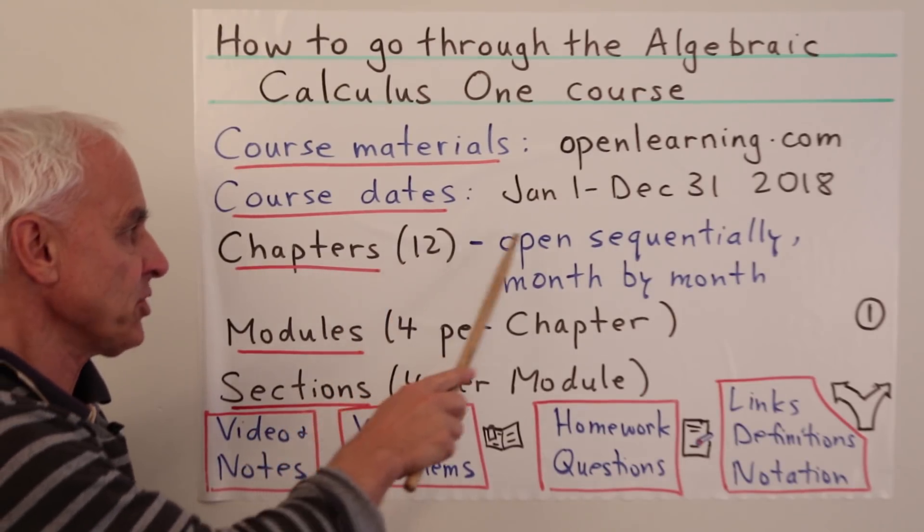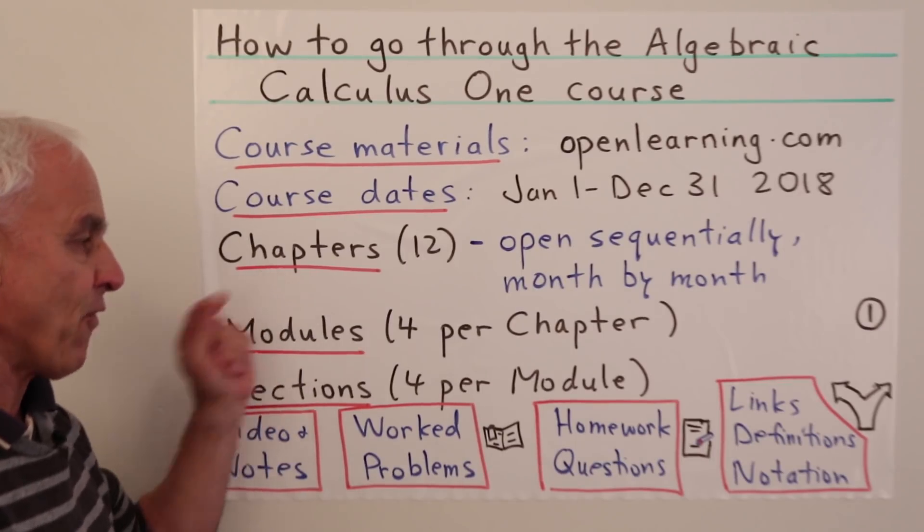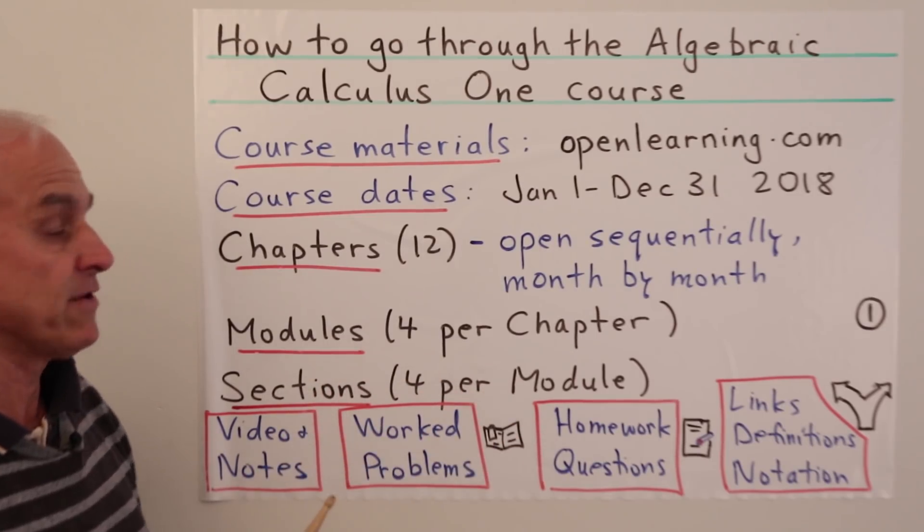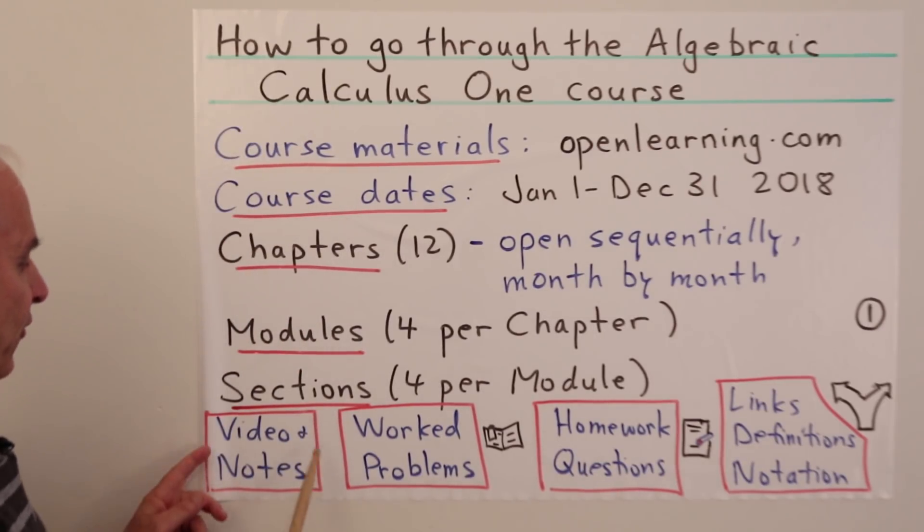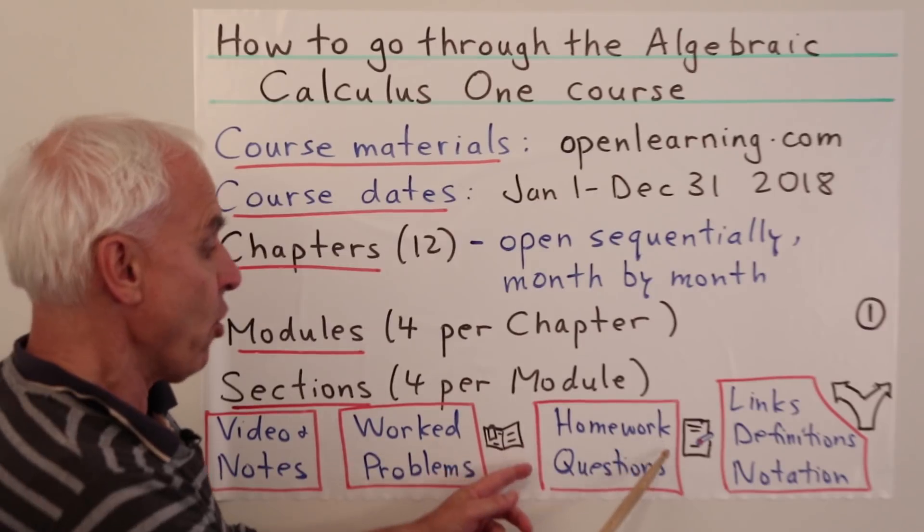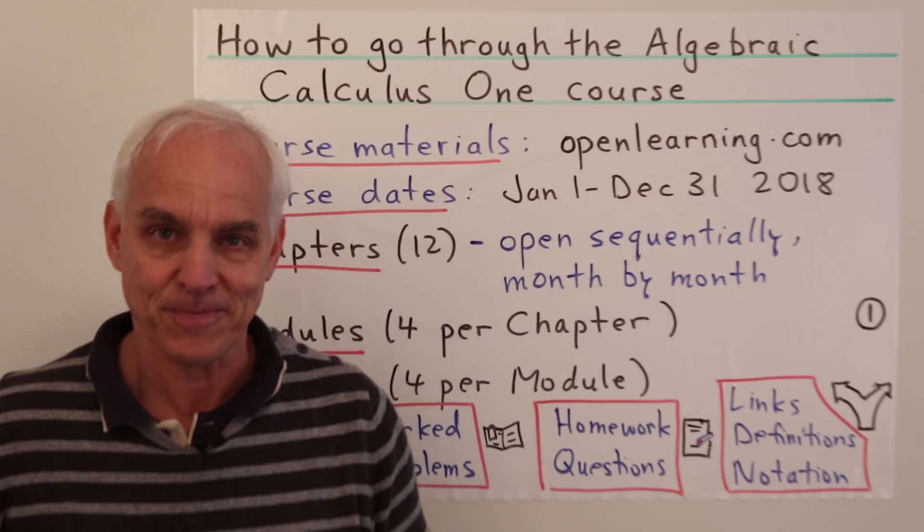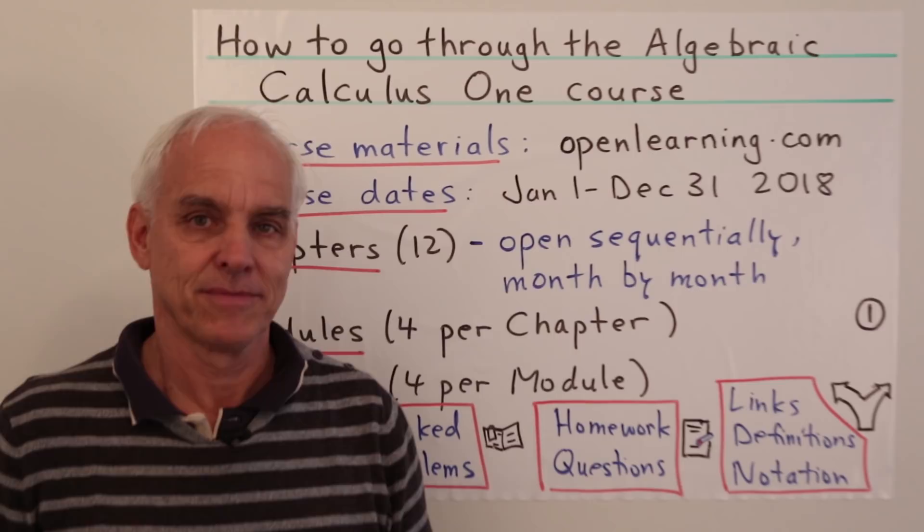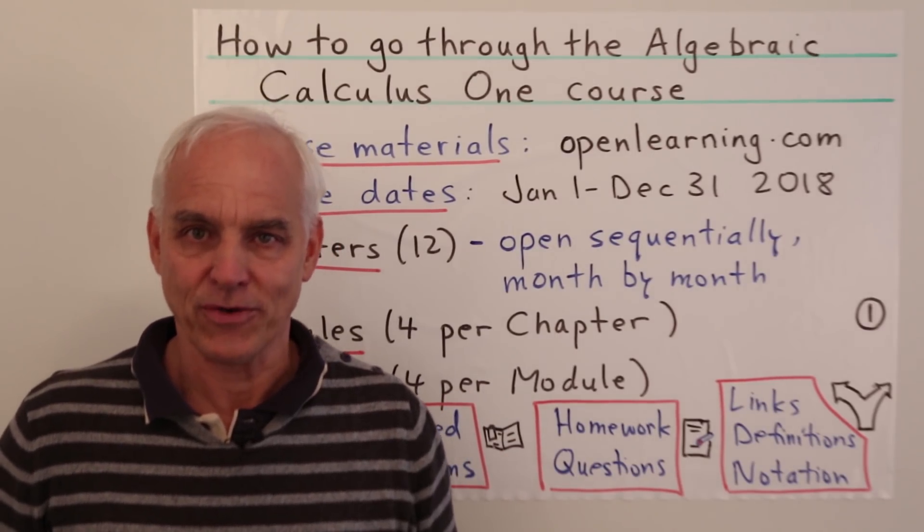There are 12 chapters running sequentially month by month. There are four modules per chapter, and each module has four sections. The sections of a module all look like this: there's a video and notes section, a worked problem section, a homework questions section, and a section on links, definitions, and notation. There are little icons here for these three different sections.